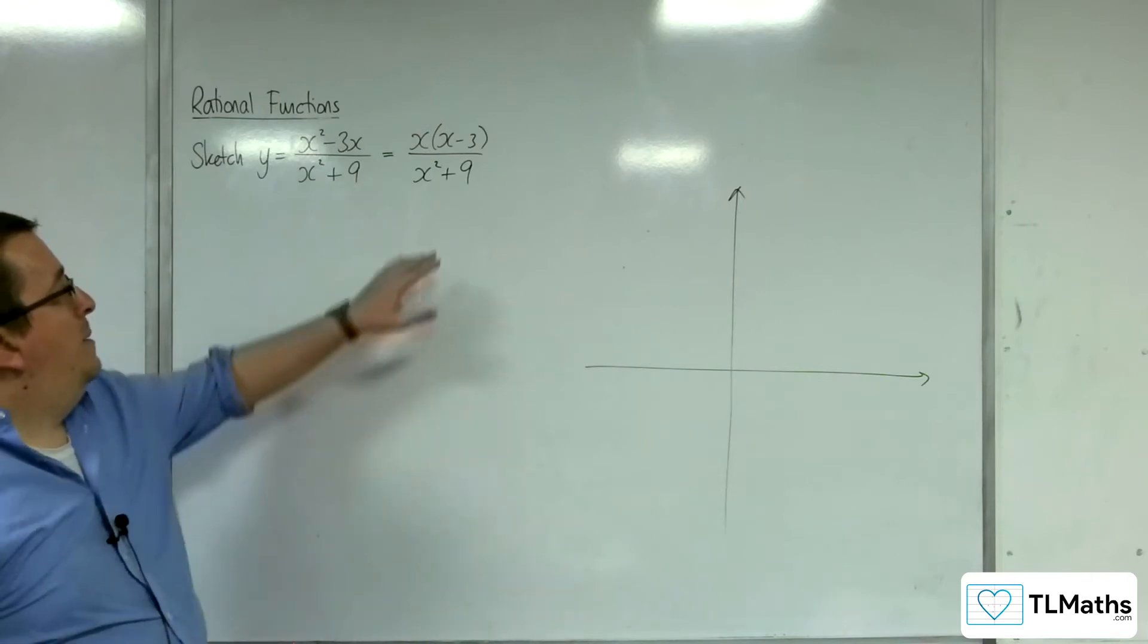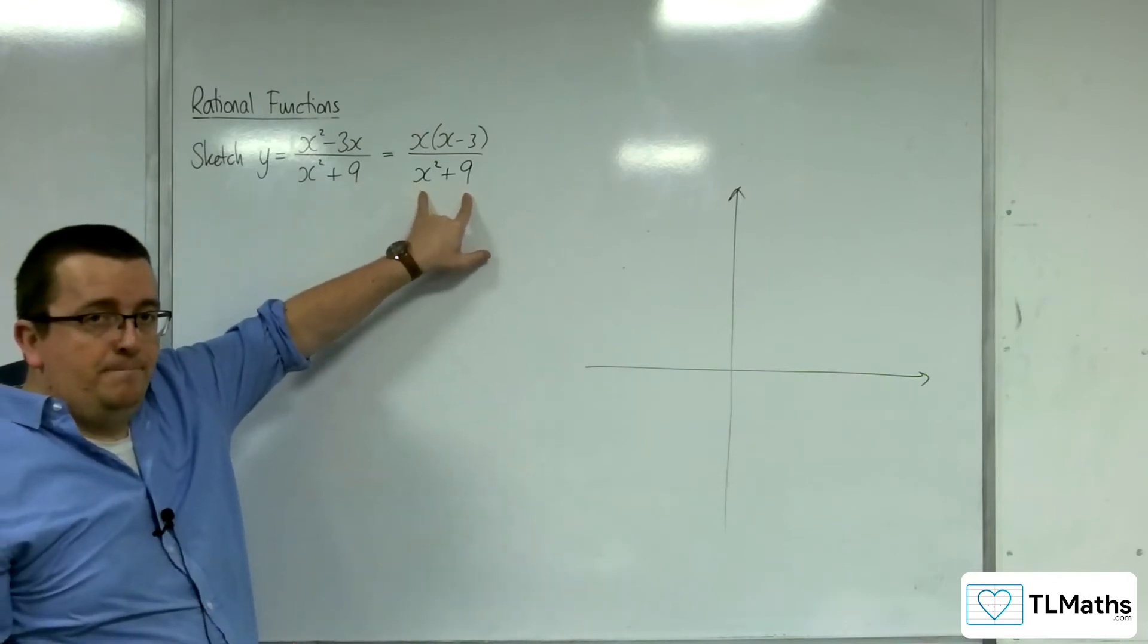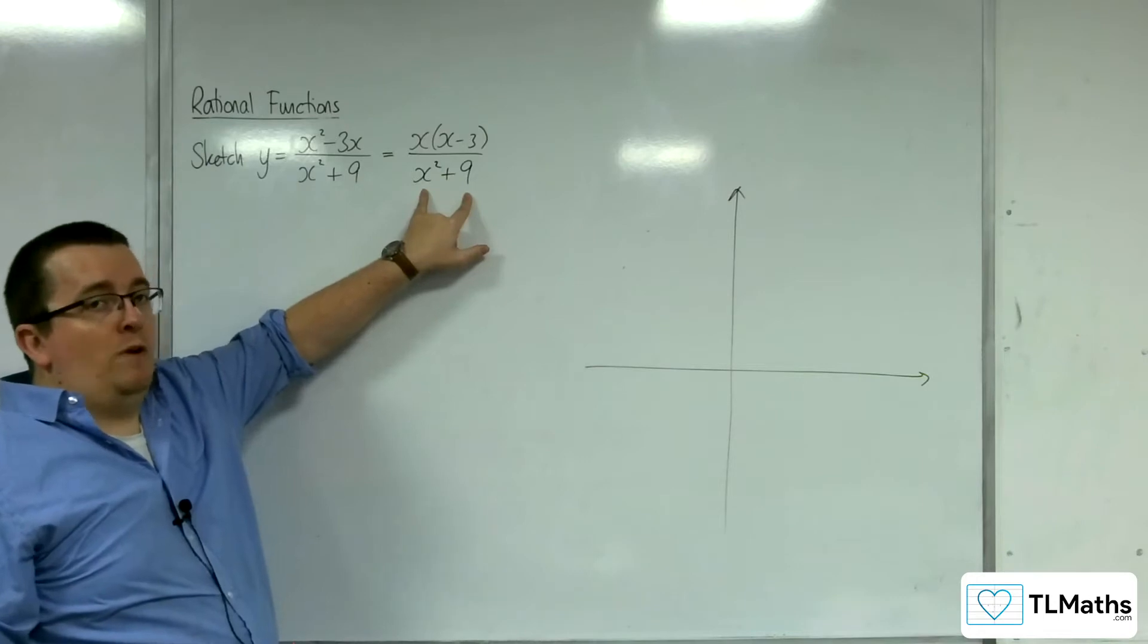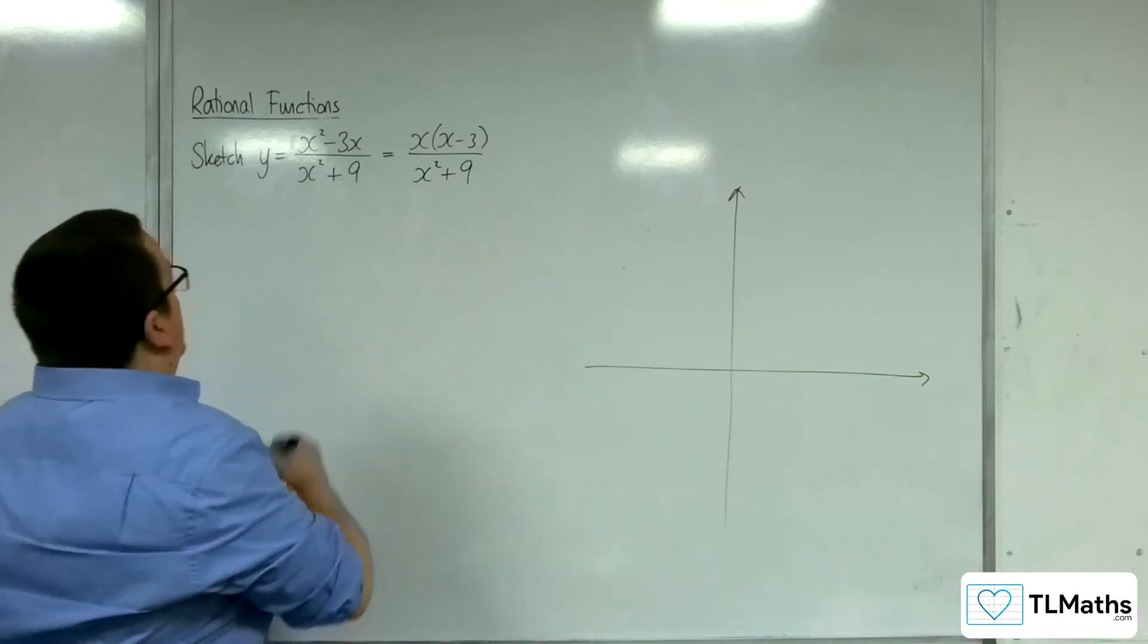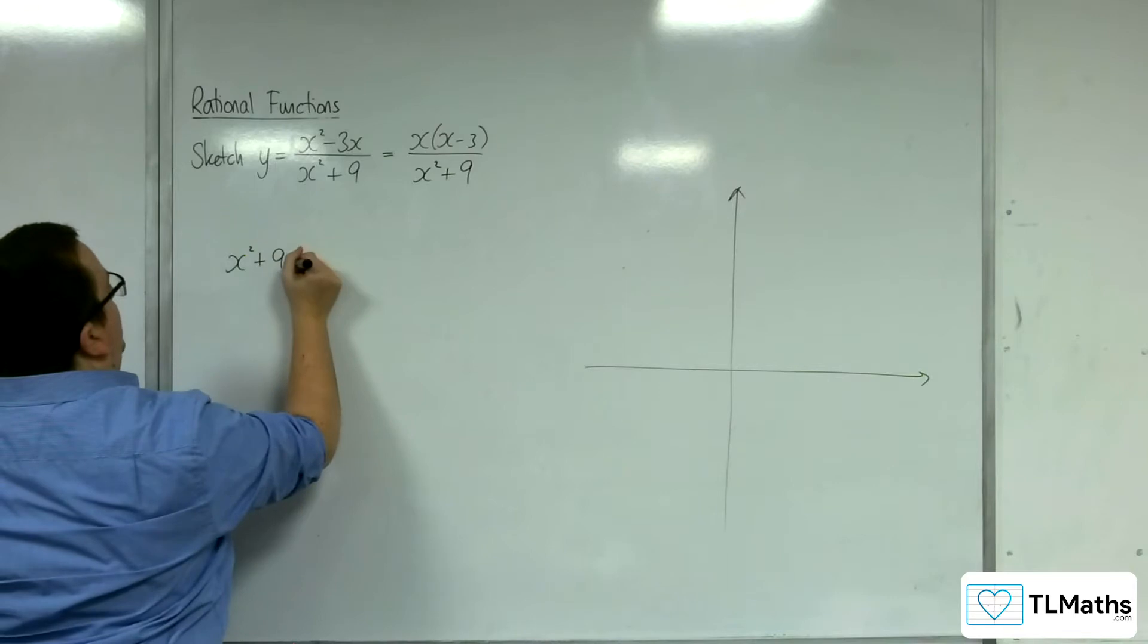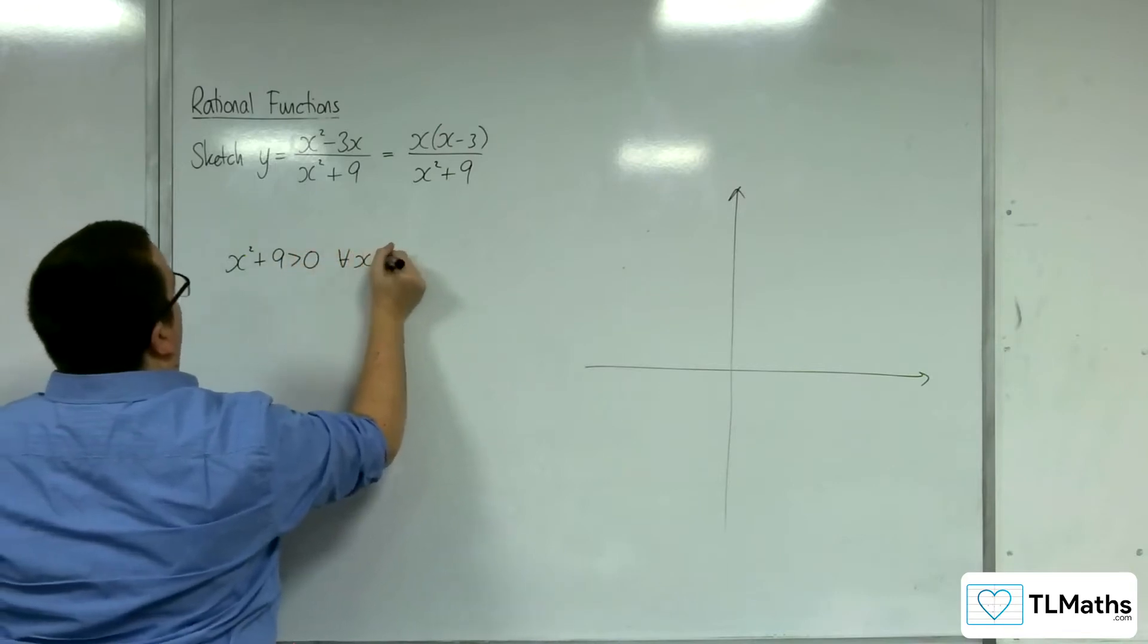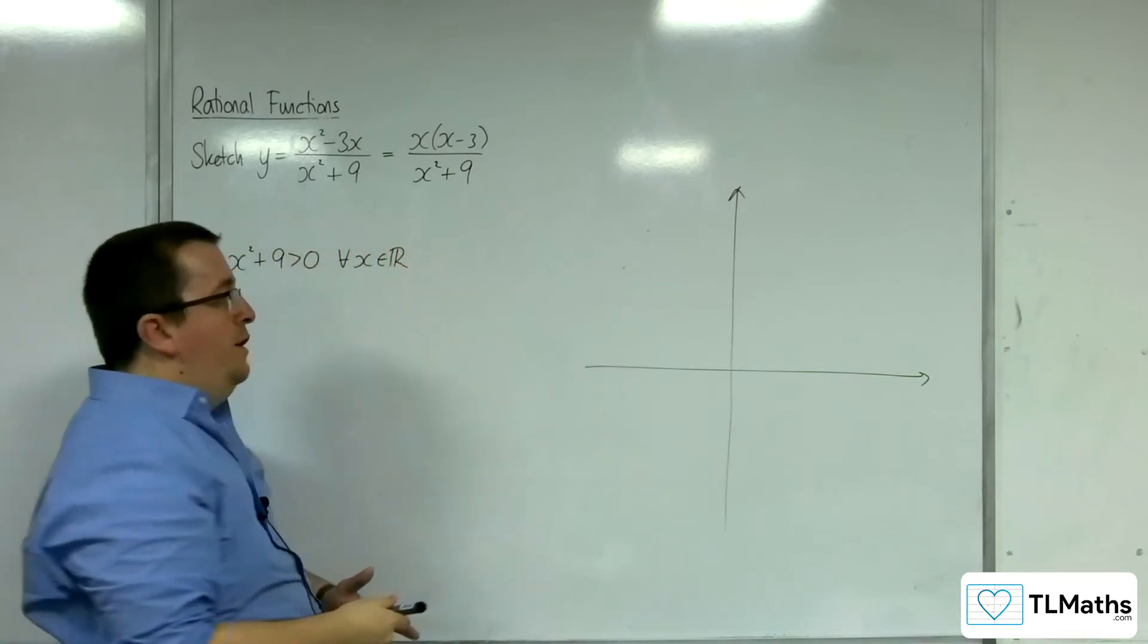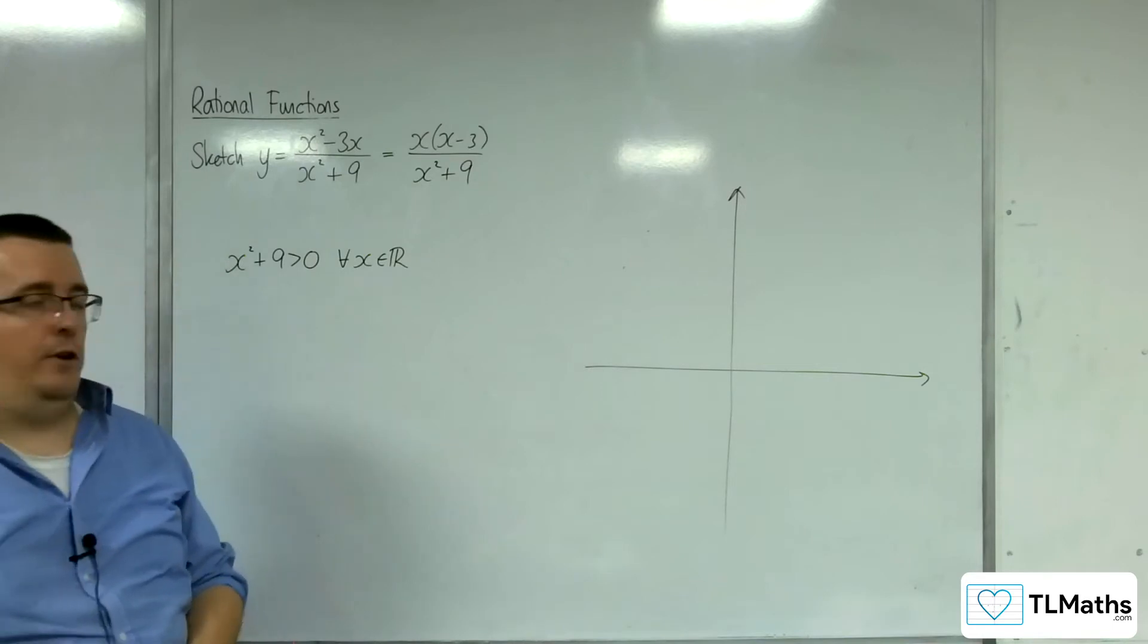But the problem is that x² + 9 is always greater than 0. So x² + 9 is greater than 0 for all real values of x, and so there are no vertical asymptotes.